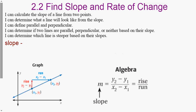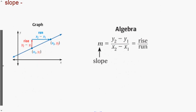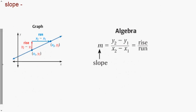Good day everyone. Today we're talking about section 2.2: Find Slope and Rate of Change. Our learning targets for today: I can calculate the slope of a line from two points, I can determine what a line will look like from the slope, I can define parallel and perpendicular, and I can determine if two lines are parallel, perpendicular, or neither using their slope.